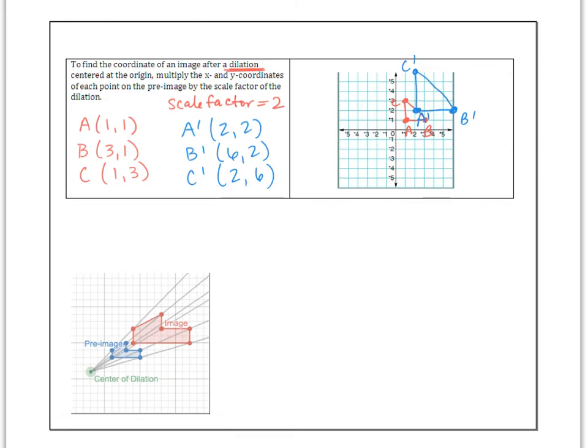And what should happen is I should have a similar triangle, but it is not congruent to the original. It's been enlarged in this case. If your scale factor is larger than 1, it will get bigger. If your scale factor is between 0 and 1, like if it's a fraction or a decimal, your figure will get smaller.